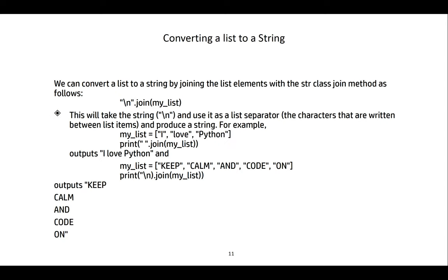We can also convert a list to a string using the join method of the string class. For example, '\n'.join(my_list) takes the newline character as the list separator and joins all items with that character between them. If my_list is ['I', 'love', 'Python'] and we use ' '.join(my_list), we get 'I love Python'. If my_list is ['keep', 'calm', 'and', 'code', 'on'] and we join with '\n', each word is printed on a separate line.